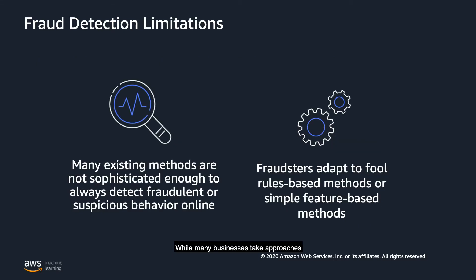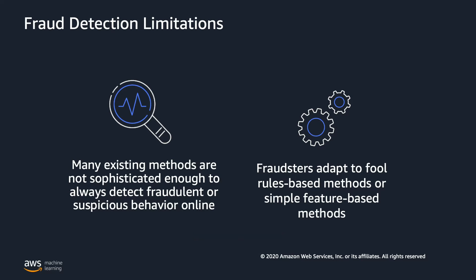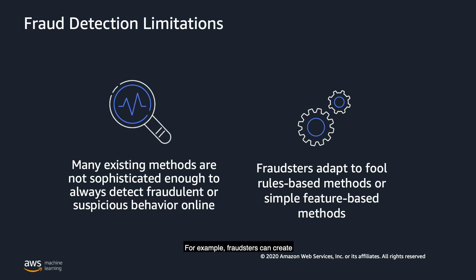While many businesses take approaches to combat online fraud, these existing approaches can have some severe limitations. First, many existing methods are not always sophisticated or flexible enough to detect the range of fraudulent or suspicious behavior online. Second, many fraudsters can evolve or adapt to fool simple rules-based or feature-based methods. For example, fraudsters can create multiple coordinated accounts in order to circumvent triggering limits that are placed on individual accounts.